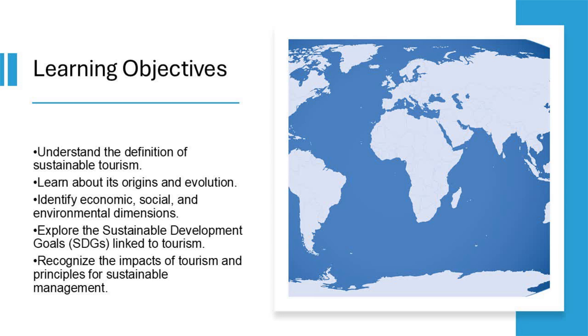Learning Objective 6: Learn practical management principles for sustainability — gain insights into strategies and tools for managing tourism destinations sustainably, with a focus on stakeholder collaboration and adaptive practice.